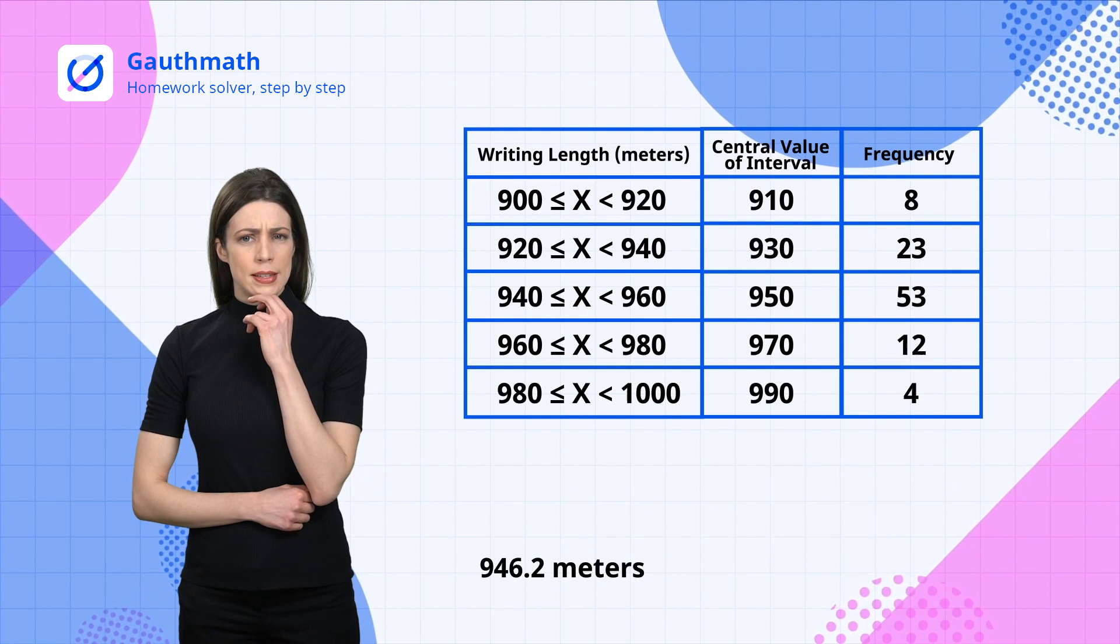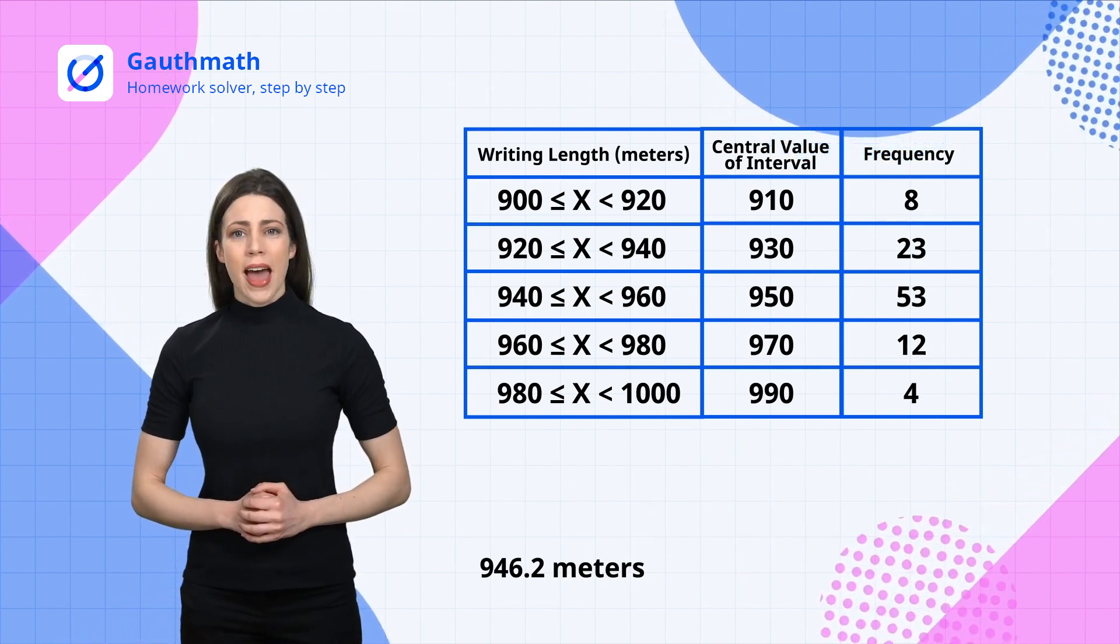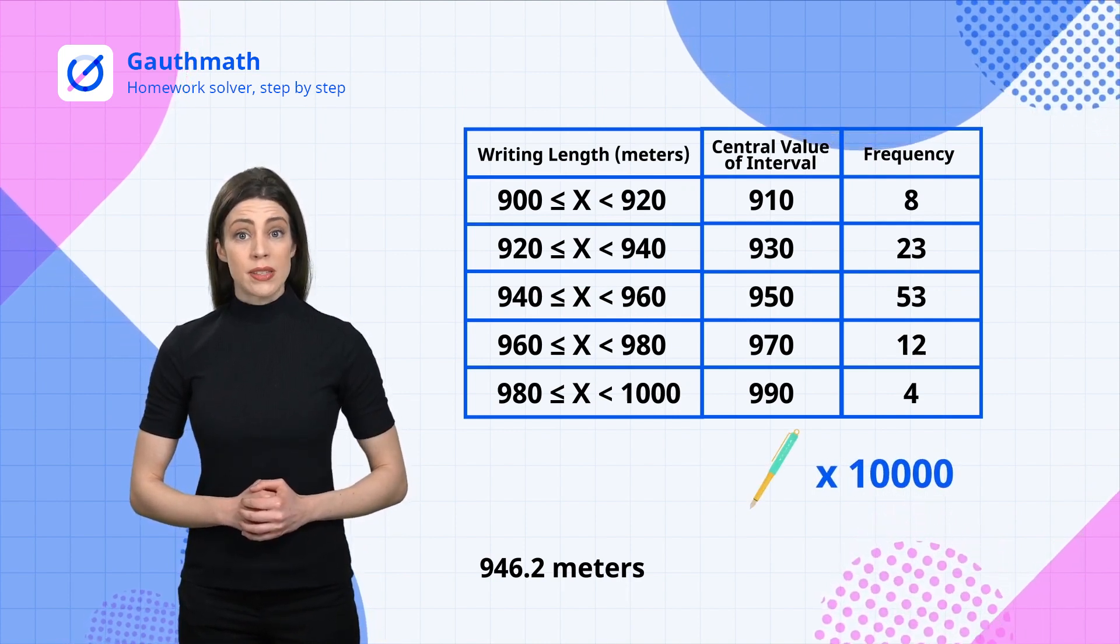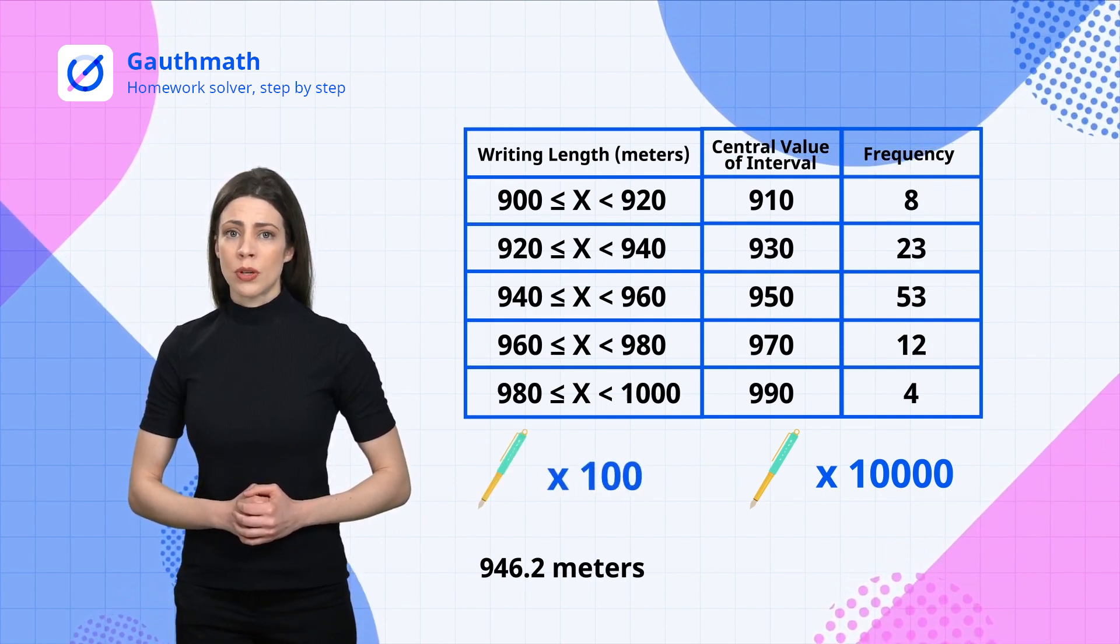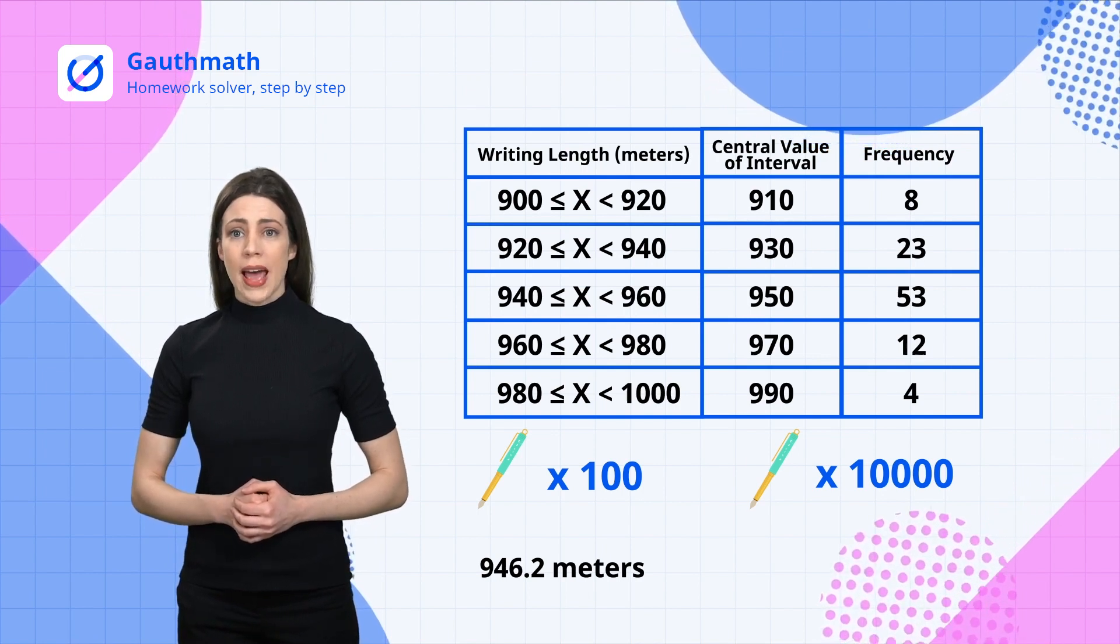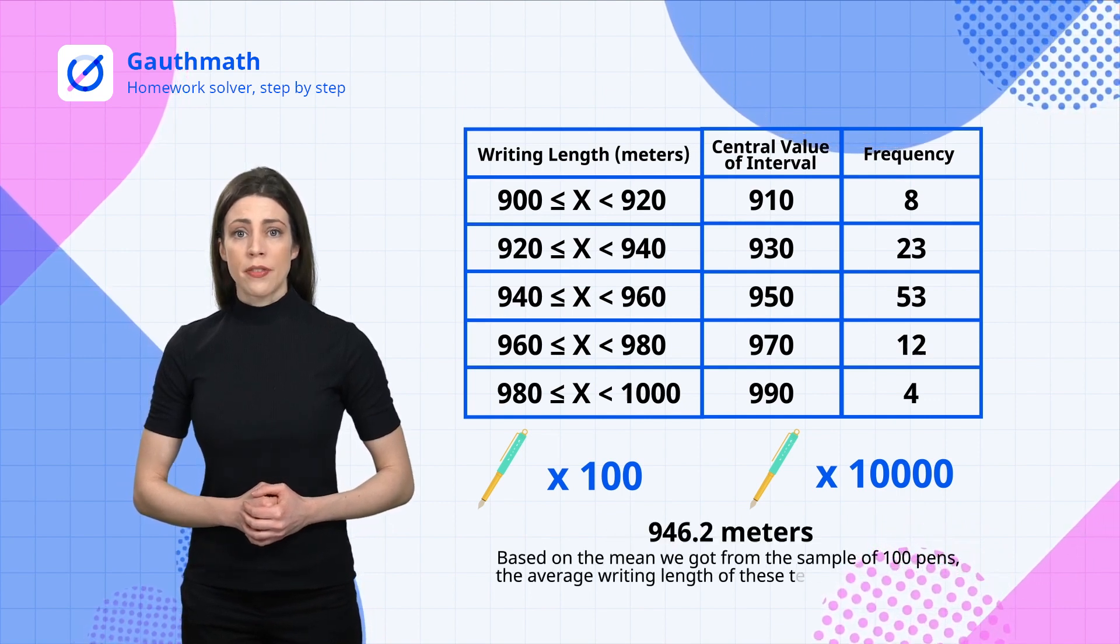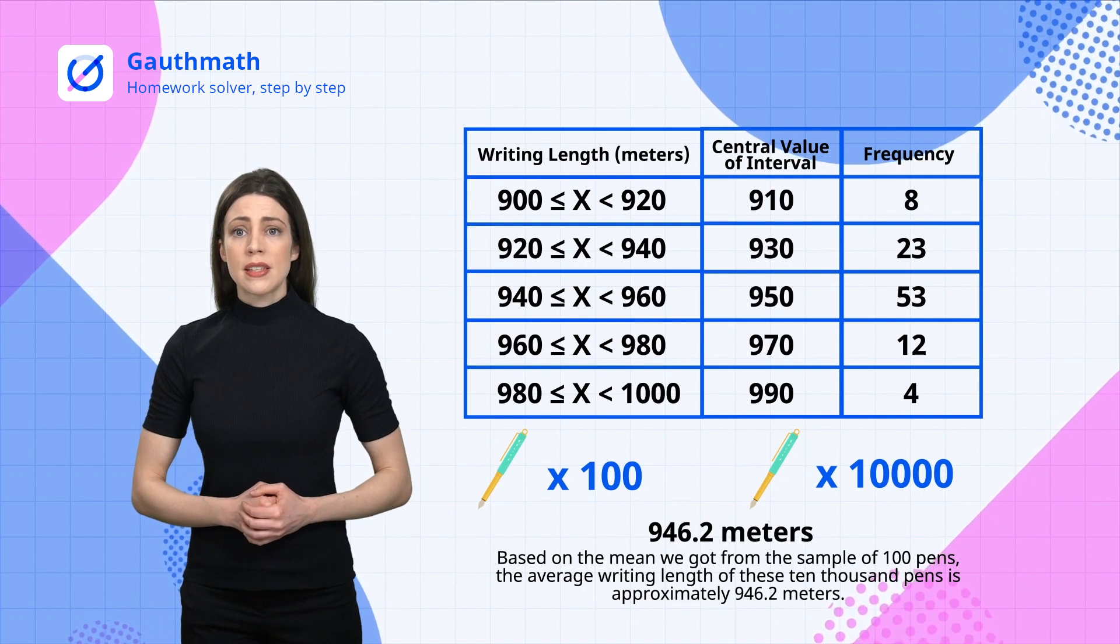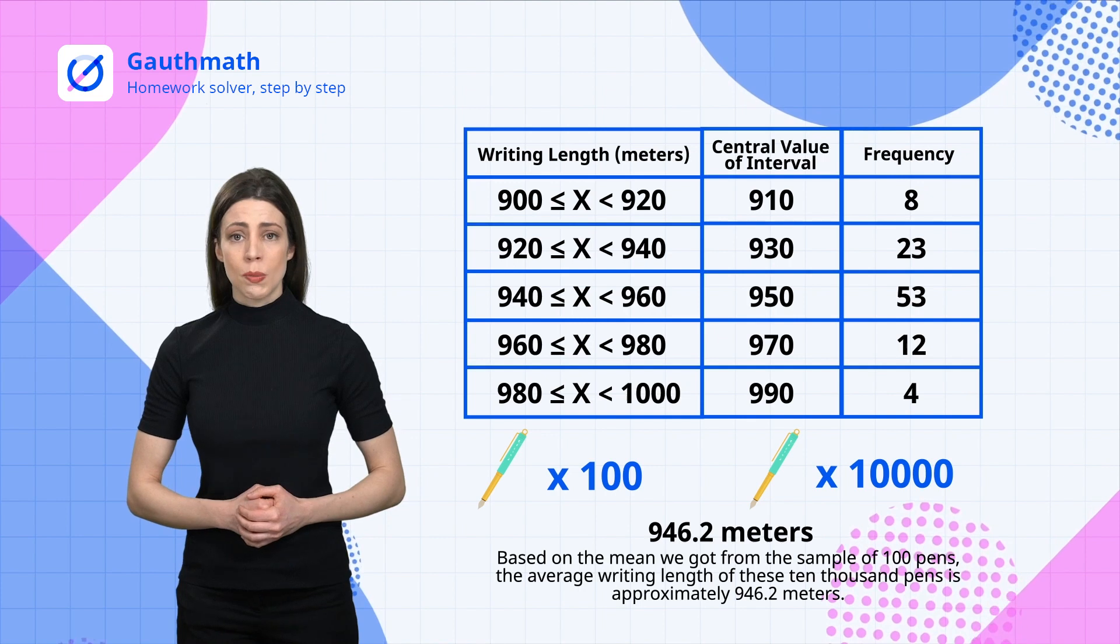We're not done yet. Remember the question? It asks us to get the average writing length of all these 10,000 pens. The result we got is the mean writing length of the sample of 100 pens. Well, all we need to do is to add one sentence to get the final result. Based on the mean we got from the sample of 100 pens, the average writing length of these 10,000 pens is approximately 946.2 meters.